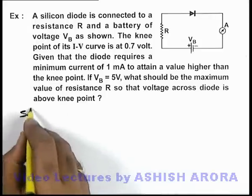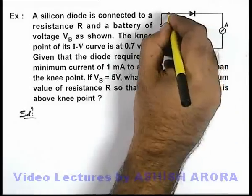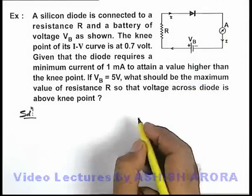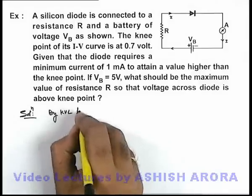Now for solution, we can see if a current I flows through the circuit, then we can say by Kirchhoff's voltage law for the loop: